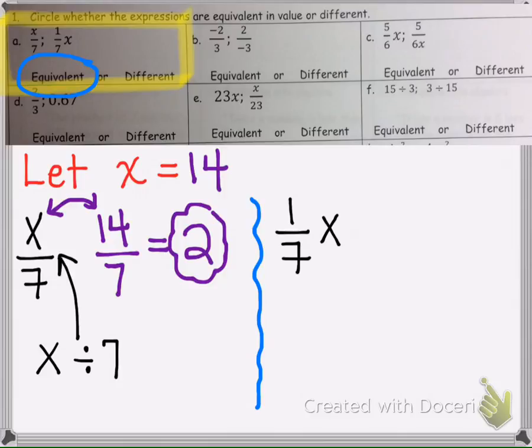Now we're going to do one-seventh x. A number next to a variable means multiply. We have to use the same x value, which was 14.